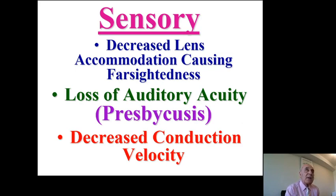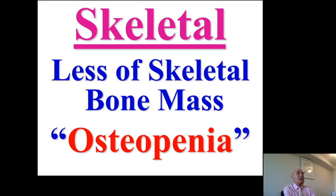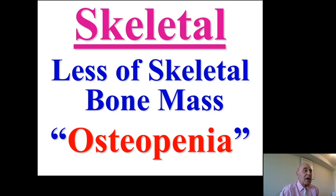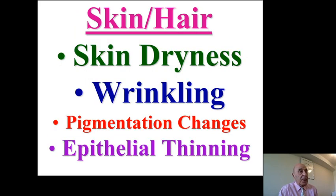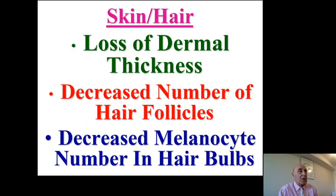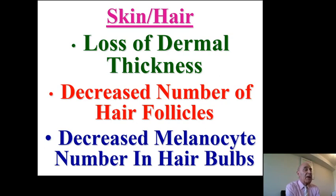Some seniors may suffer from presbycusis, which is loss of auditory acuity or hearing deficits, and there may be a decrease in conduction velocity. For the skeletal system, there is a decrease in skeletal bone mass, described medically as osteopenia. For the skin and hair, there is dryness, wrinkling, pigmentation changes, thinning of epithelial cells, loss of dermal thickness, a decrease in the number of hair follicles, and a decrease in melanocyte numbers in hair bulbs.